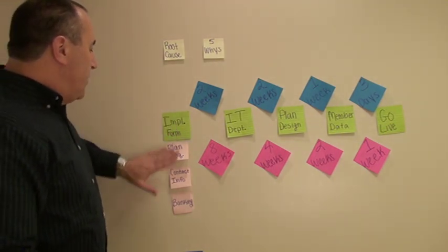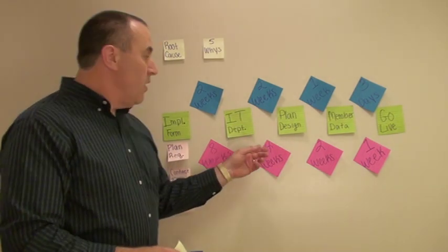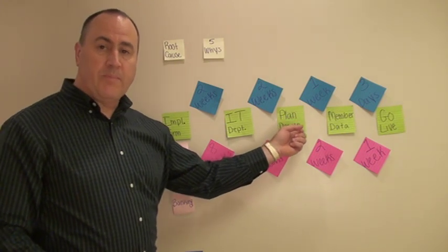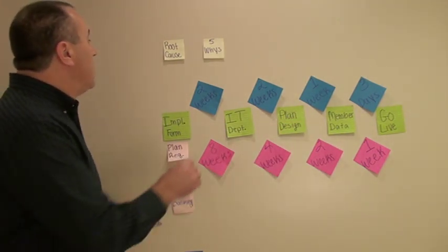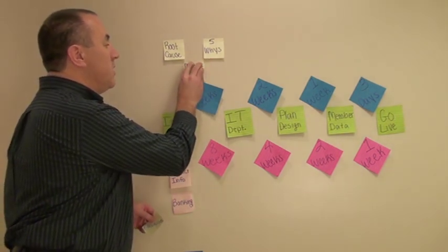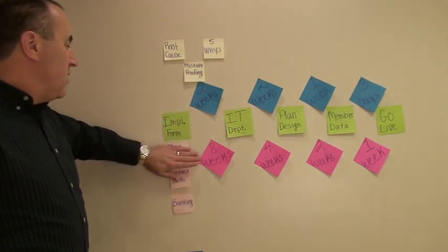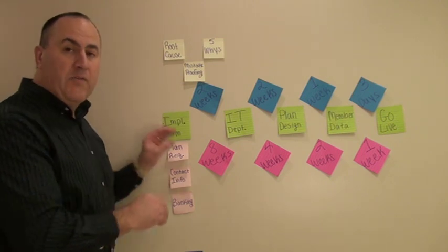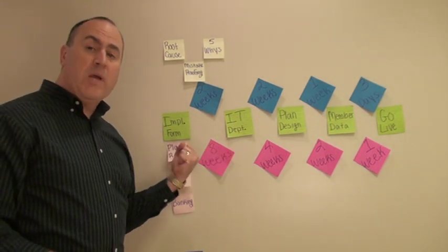So what we did, and the other thing was the IT department as well, was not getting all their information to build the system, to do the plan design. So another process that we use with Lean Six Sigma is called mistake proofing. How do we prevent these mistakes from happening? Make it happen right the first time so we don't have to redo it, so the IT department doesn't have to re-request that information.